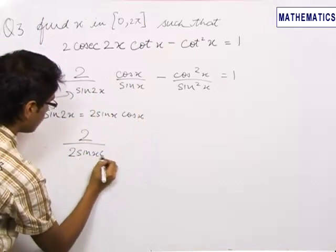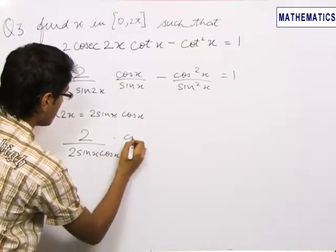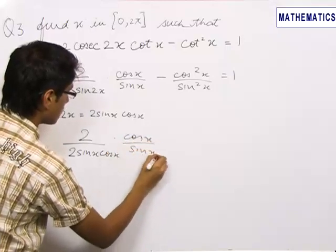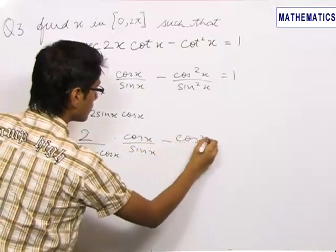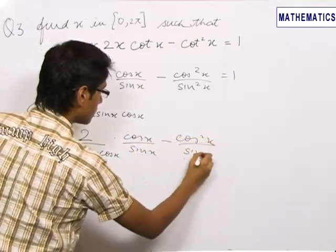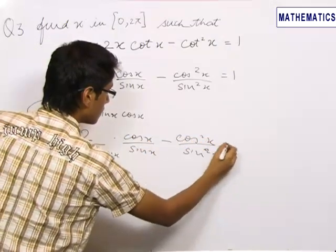This becomes 2 upon 2 sin x cos x into cos x upon sin x minus cos square x upon sin square x equals 1.